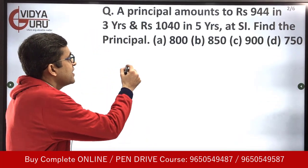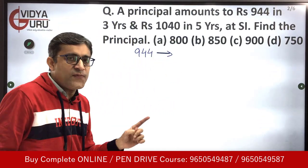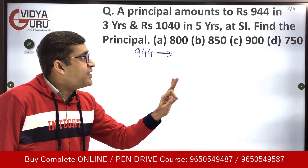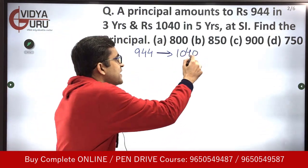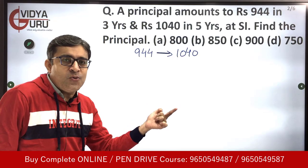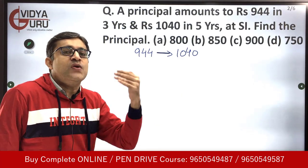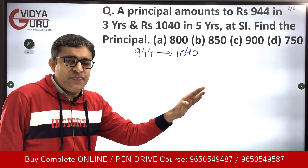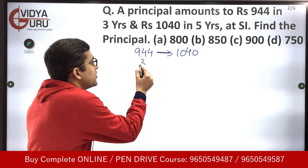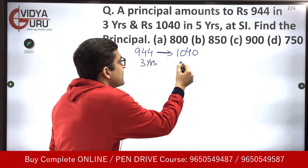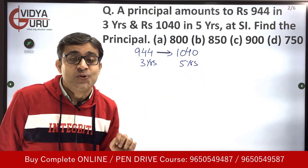In the first three years the amount was 944. The second condition is that after a period of five years the amount becomes 1050. So there has been an increase in the total amount. The total amount gets increased because of the interest — with every year there is a certain interest that gets added. After three years it was 944 and after five years it is 1040, so there is a gap of two years.